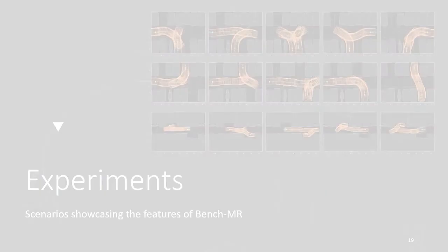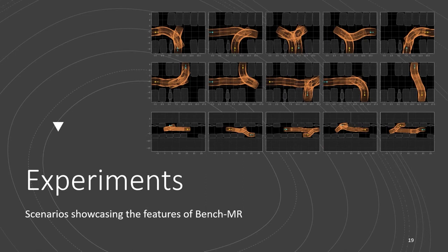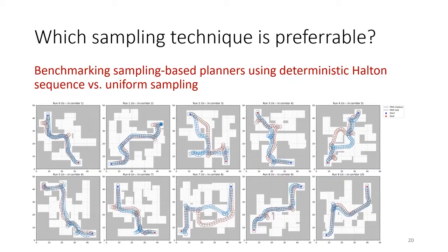We now demonstrate in detail some experiments where BenchMR provides useful insights about the behavior of sampling-based motion planners. In a first example we compare different sampling techniques. Namely we compare the behavior of the PRM algorithm using the deterministic Halton sequence and the uniform distribution for sampling states.